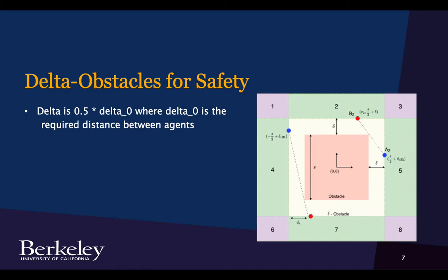That is where every point in this creamish region is less than or equal to delta away from the outer edge of the obstacle in the infinite norm.